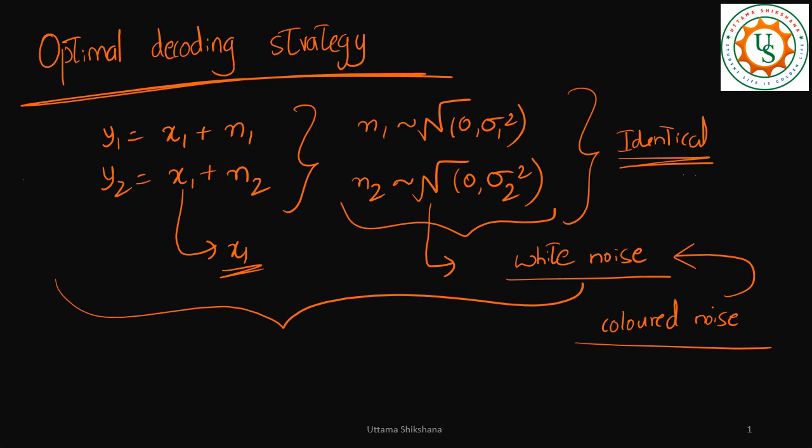Hey guys, welcome back. In this video I want to talk about decoding strategy. This would be the follow-up question from the previous interview question. So this could be another probable question that when equation number 1, y1 is equal to x1 plus n1, and y2 is equal to x1 plus n2, when we have these two equations then how to decode x1?